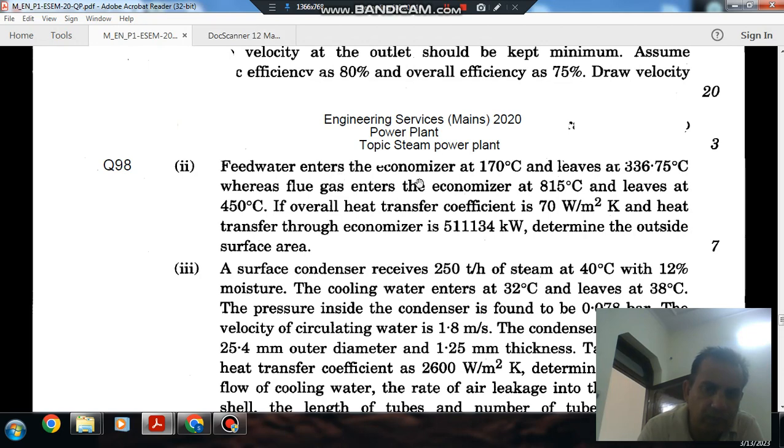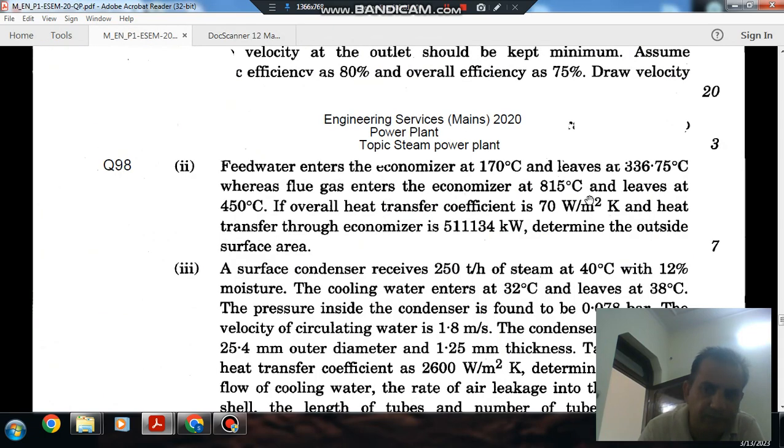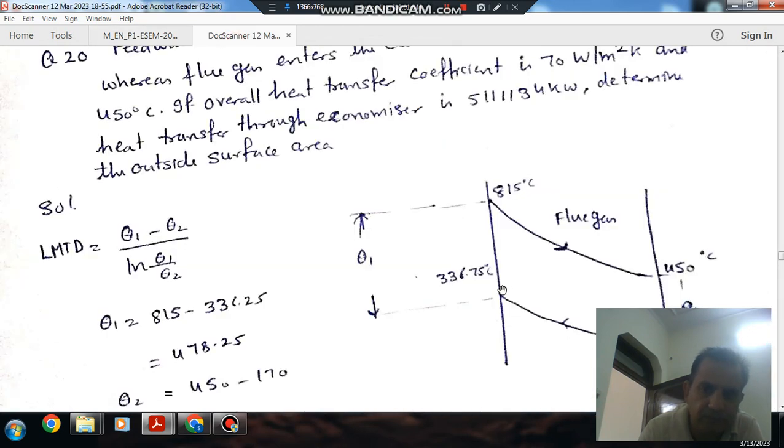So in the economizer, counter flow takes place. Gases enter at 815 degrees Celsius and leave at 450 degrees Celsius. So this gas is entering, this is leaving. And water is entering at 170 degrees Celsius and leaving at 336.75 degrees Celsius.